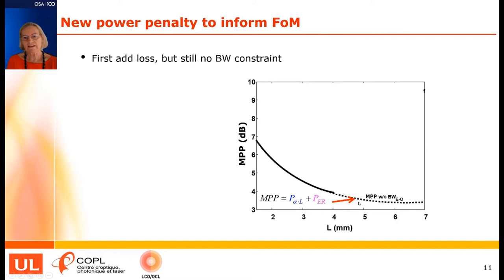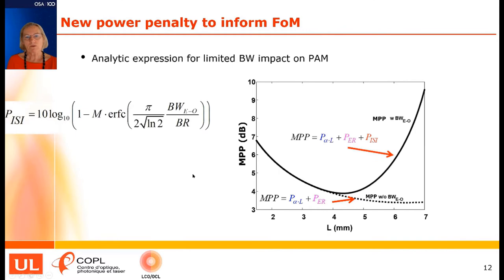If I plot power penalty versus modulator length and ignore the bandwidth constraint, I get a curve suggesting the longer the modulator the better the performance. However, when I add the impact of inter-symbol interference from limited bandwidth, the change in power penalty is significant. Instead of longer always being better, there is in fact a sweet spot — an optimal length for the modulator.